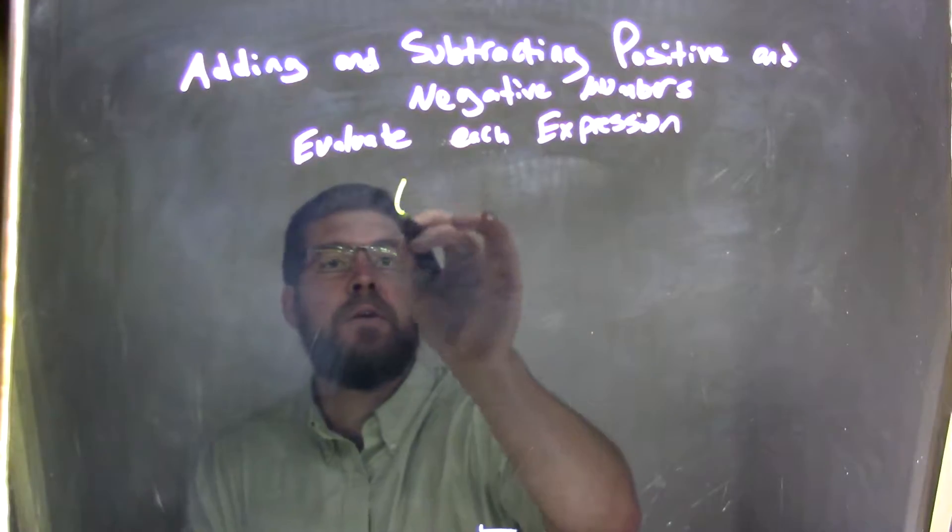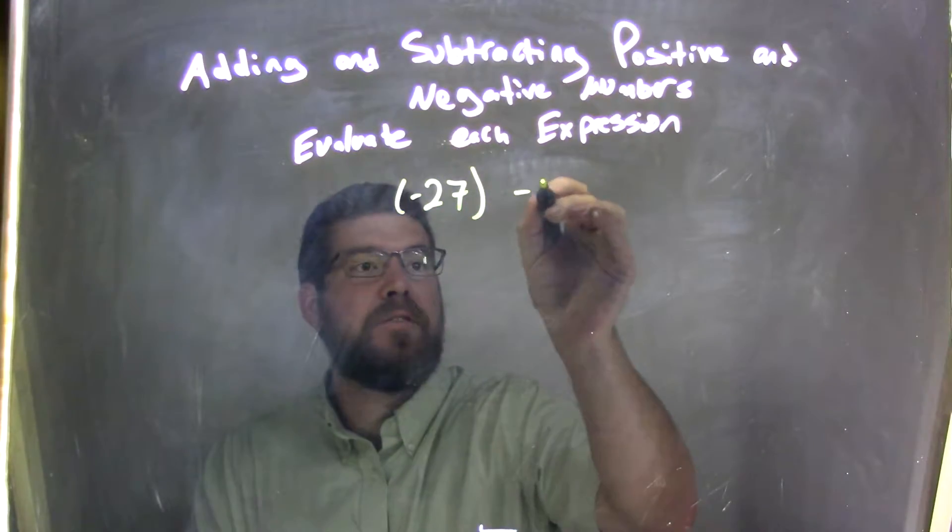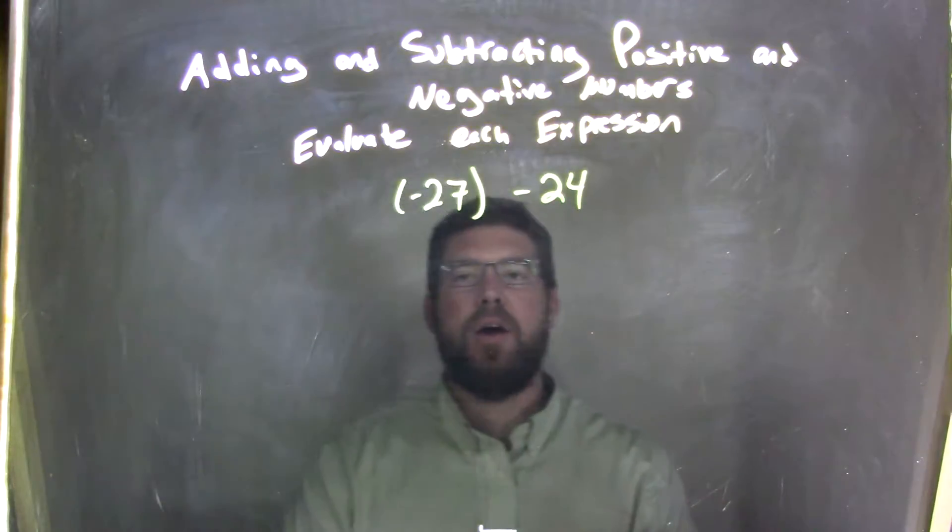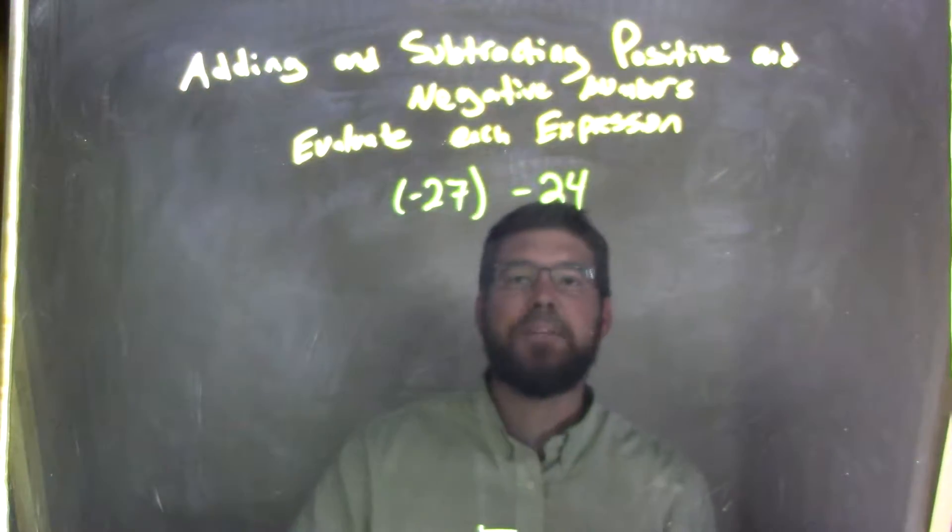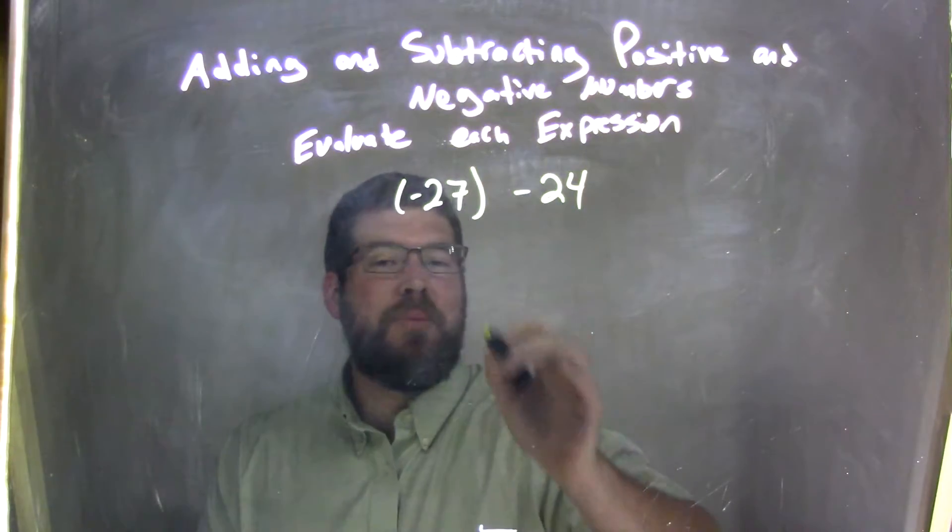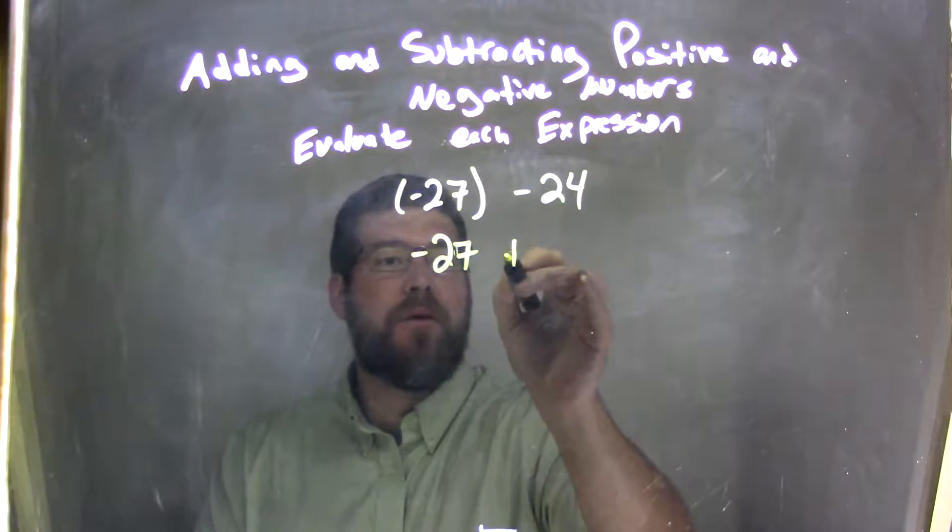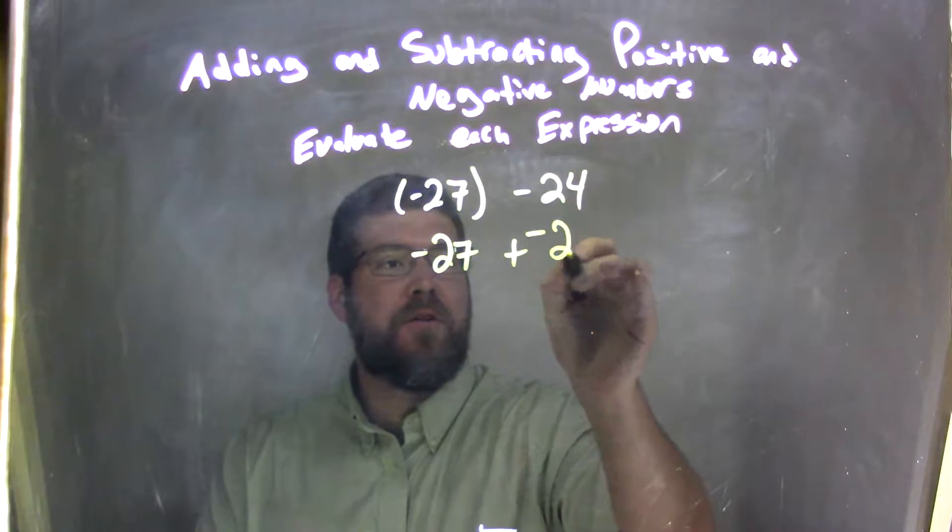So if I was given this expression, negative 27 minus 24, well if I have negative 27 minus 24, I can rewrite this minus to be adding a negative. So I can rewrite this to be negative 27 plus a negative 24.